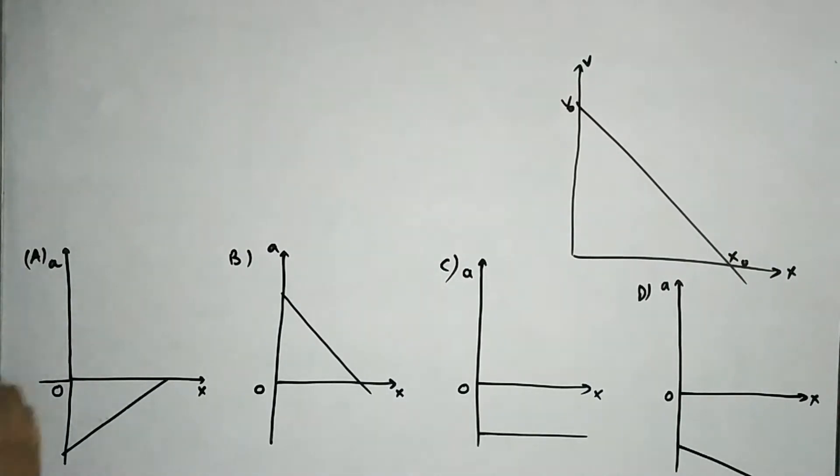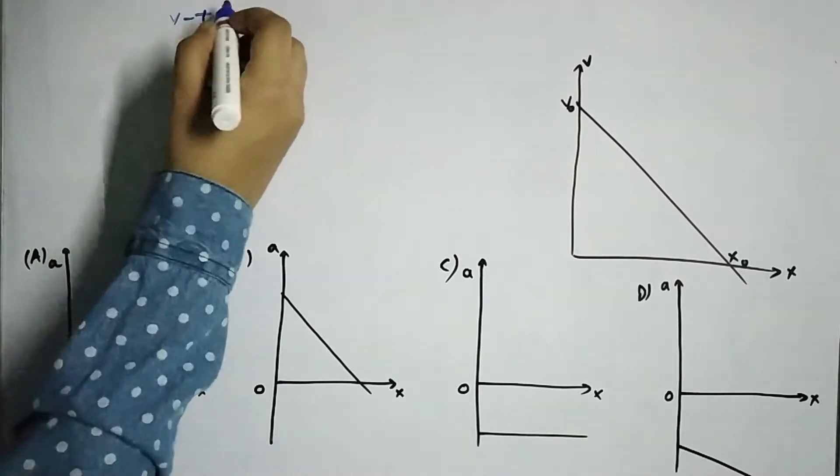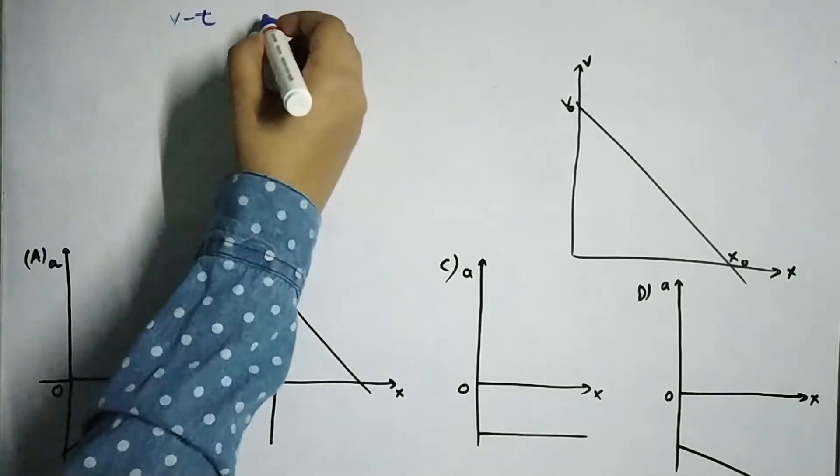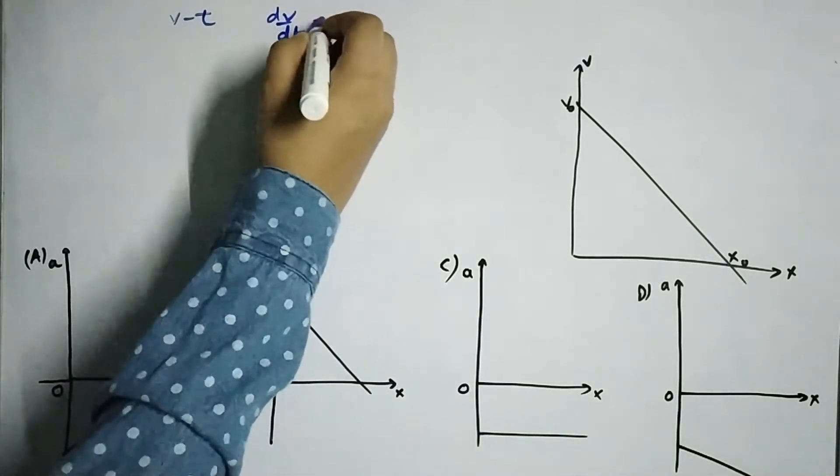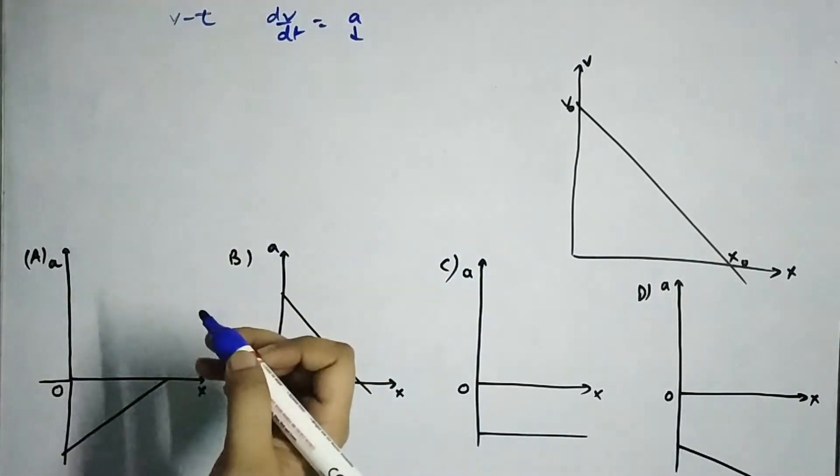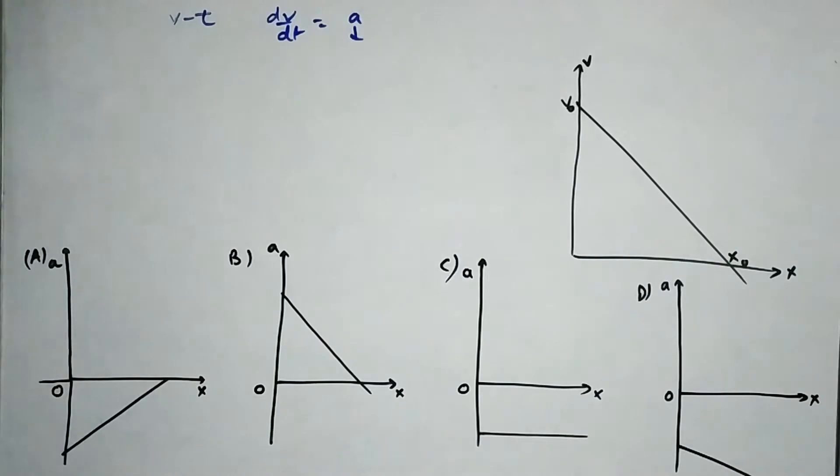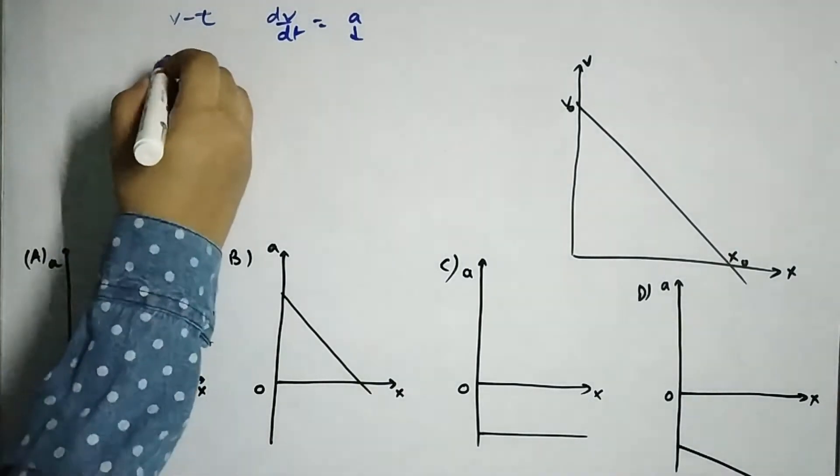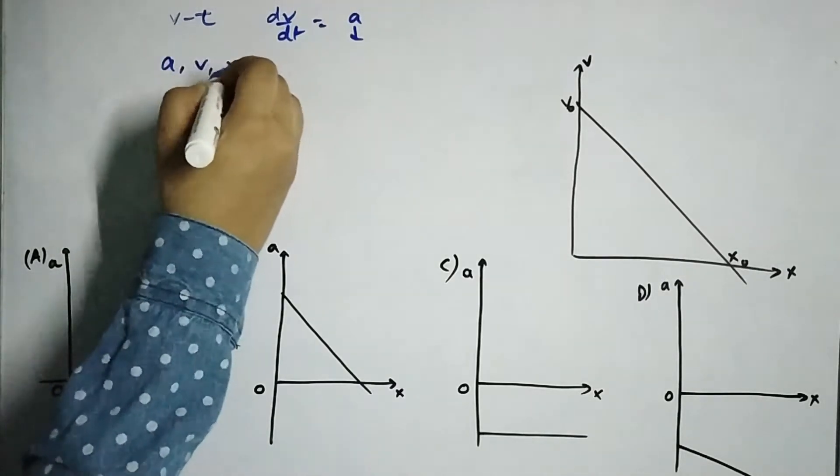Now here since we don't have our usual vt graph in which we just differentiate v with respect to t and we get a. So that graph would be a versus t. Now here since we have to find a versus x relationship, so we have to find some other relationship that will relate a, v and x.